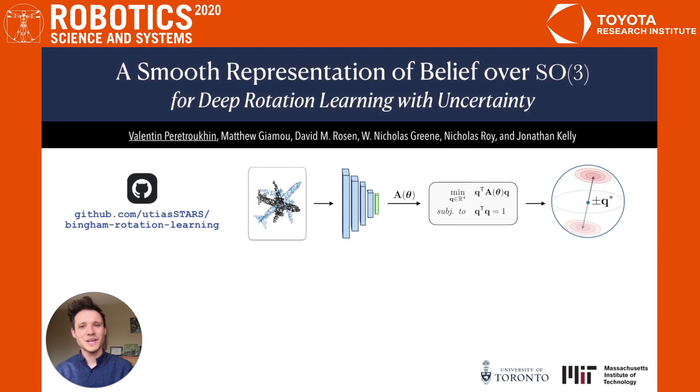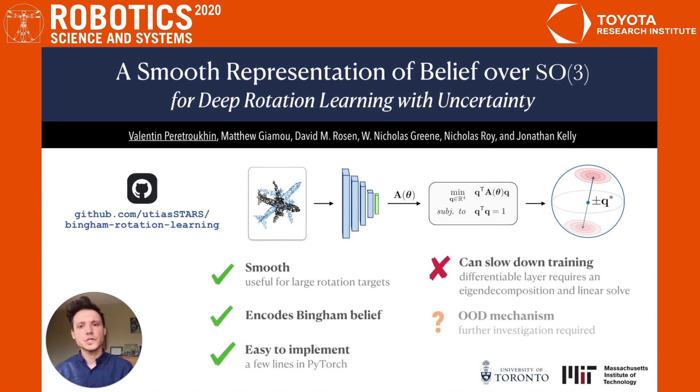In summary, we have created a simple and elegant representation for rotations that is smooth, probabilistic, and easy to implement. Our method incurs some additional computational cost, but this is marginal in many realistic scenarios. In future work, we are interested in further investigating the OOD mechanism we propose. Finally, we invite you to use our representation in your own work. You can clone our repo to get started. Thank you.